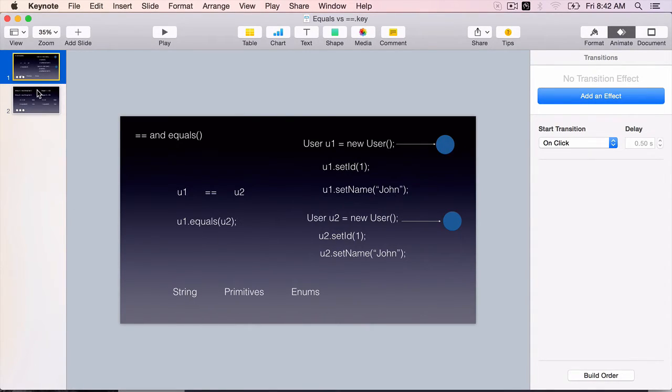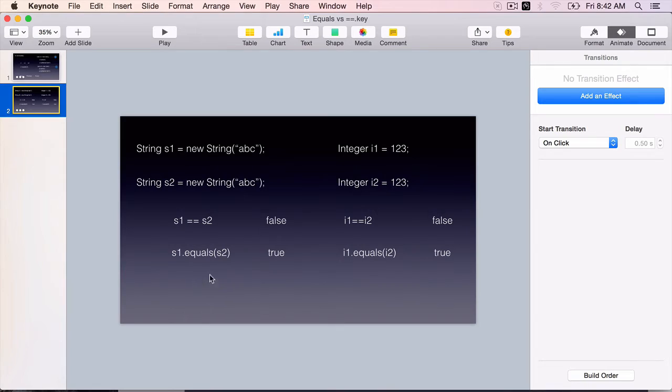For the string, primitive types, and enums, the equals method will do a deep comparison of the contents.